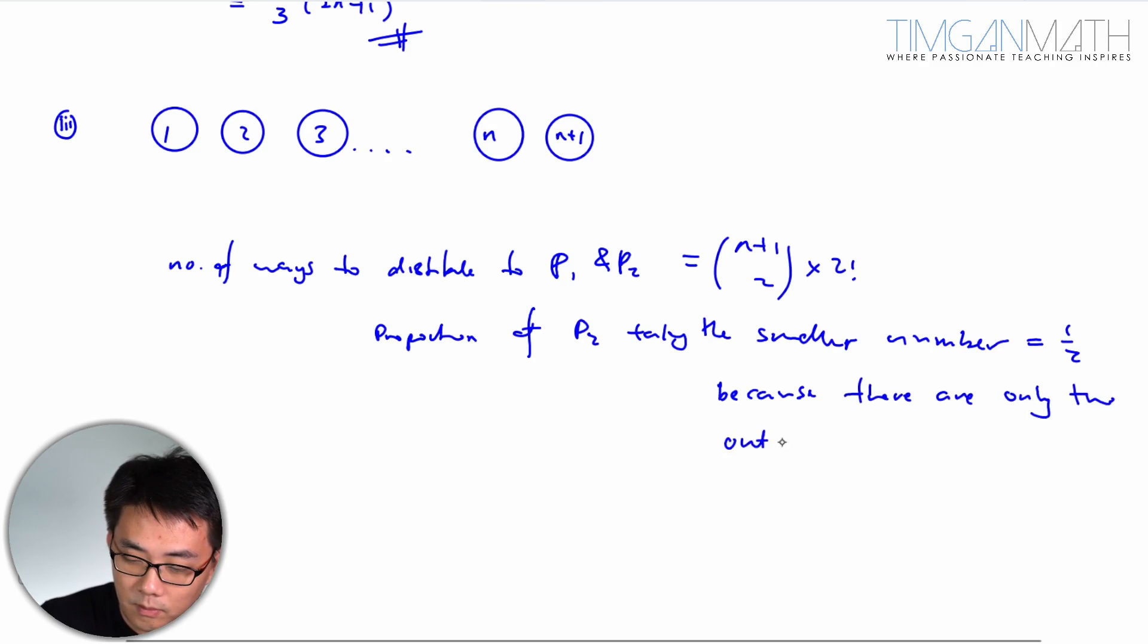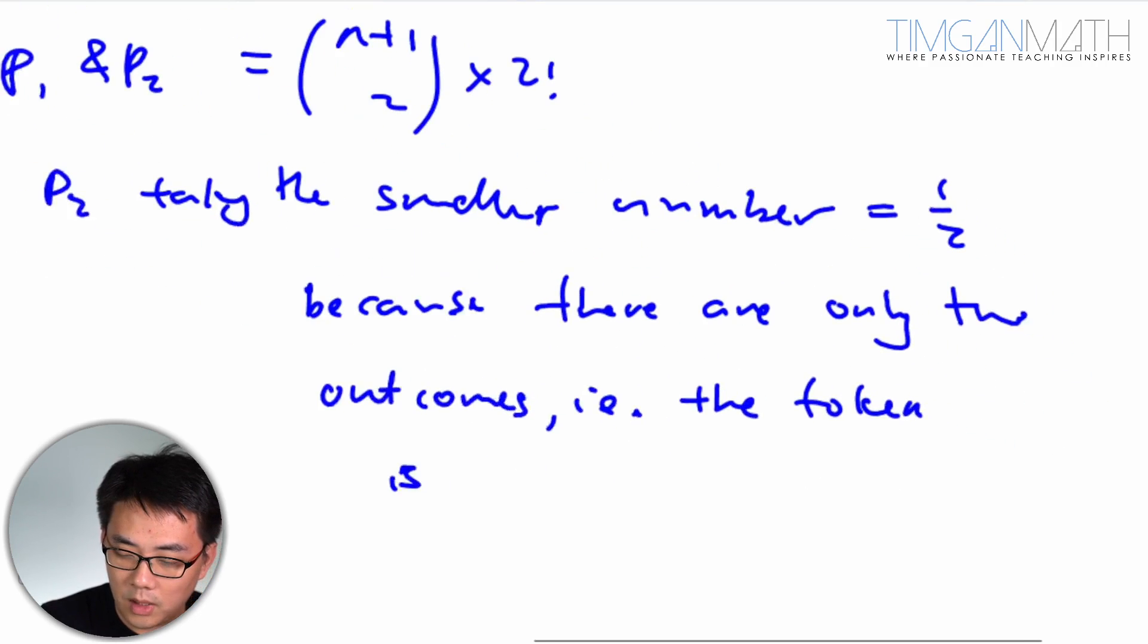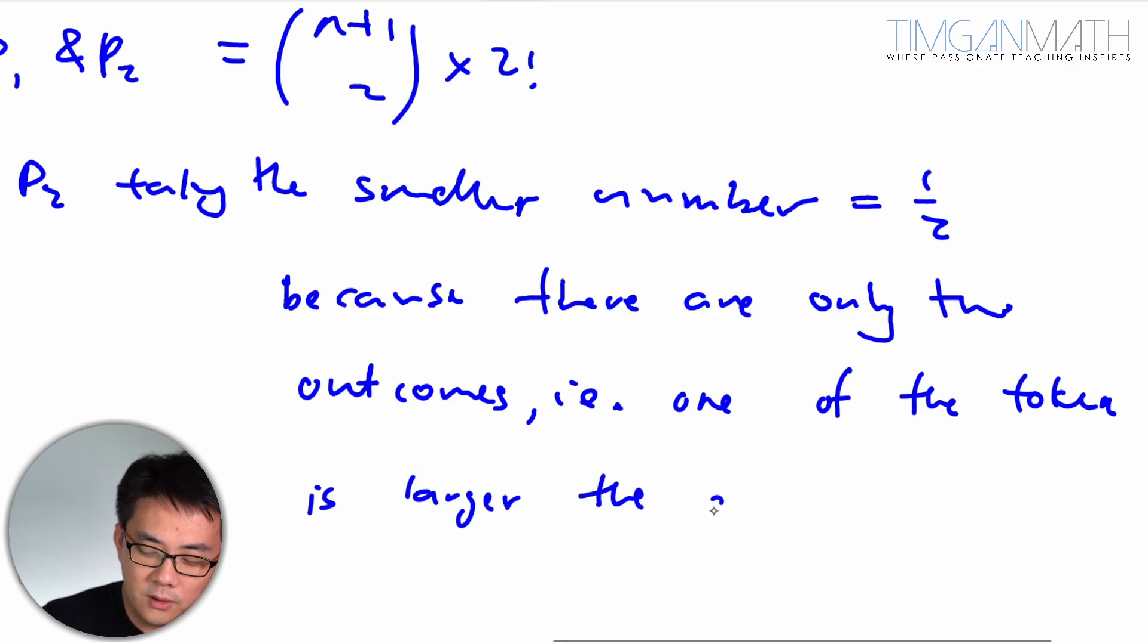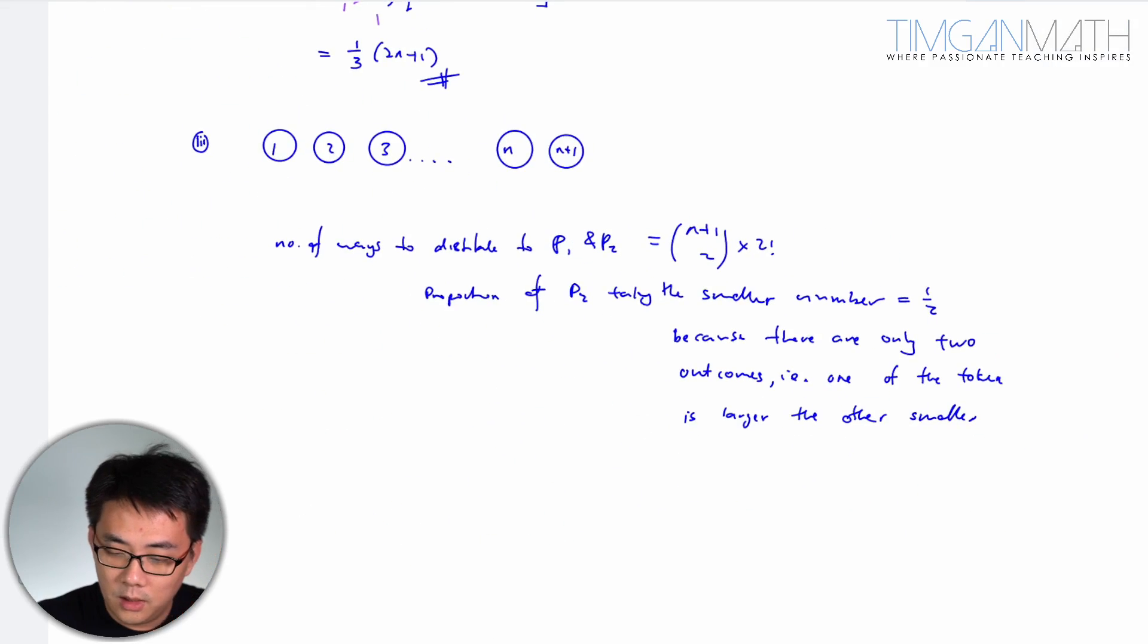When you choose the number, there are only two outcomes. One of the tokens will be larger, the other is smaller. There are only two outcomes.